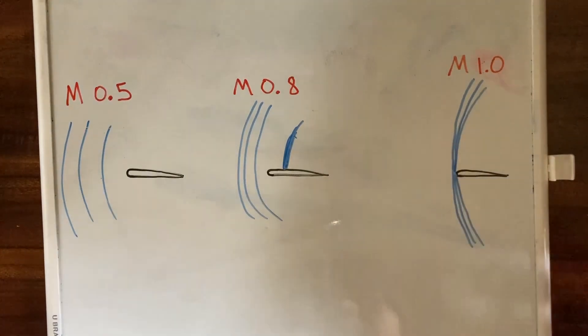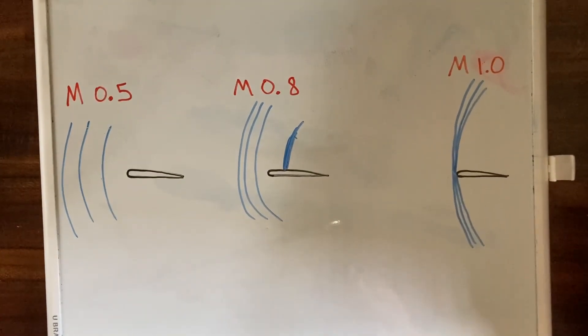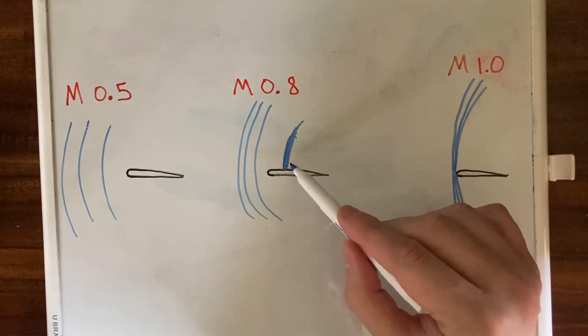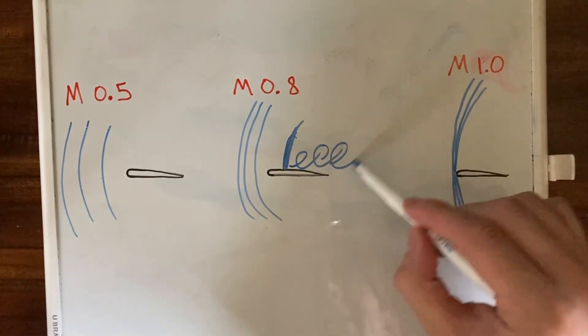That's where most of the issues related to flight approaching the speed of sound start to come from, is that shock wave there. It does things like create turbulent airflow behind it, which spoils the lift being produced by this part of the wing.